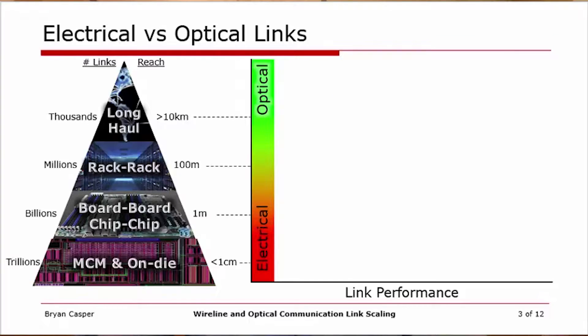Over the years, there has been tension or debate between whether we use an electrical link or an optical link for a given distance. That's represented in the right-hand graph, where generally speaking, electrical links are used for shorter distances — meter level or less — while optical links, at least over the last several decades, have been used for longer distances. Depending on circumstances or applications, there will be a crossover point between electrical and optical, indicated by the vertical bar in this chart.